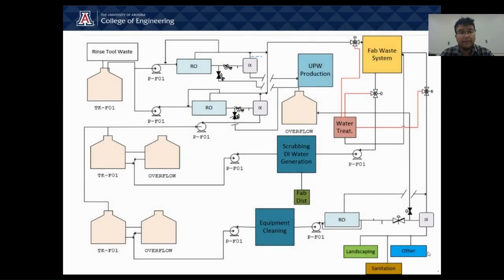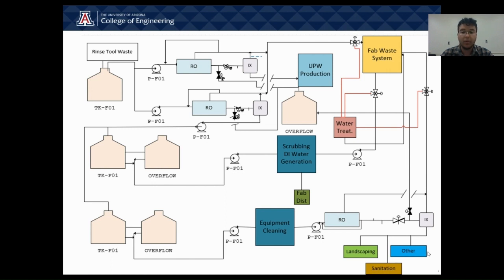Next, we move on to the PFD. As you can see, the waste generated from the rinse tools is connected directly to a storage tank, which is then further processed into the RO and ion exchange in a parallel system. The waste generated during the RO is recycled back, and part of it will be sent directly to the fab waste system along with the waste generated in the ion exchange. The product from these processes will be used for ultra-pure water production, scrubbing DI water generation, and equipment cleaning in different parts of the fab. We have different pumps for mass transfer as well as their respective storage tanks. Waste generated during equipment cleaning will once again go through an RO and ion exchange process for use in landscaping, sanitation, and other uses.